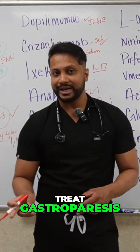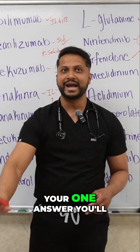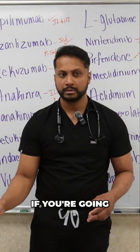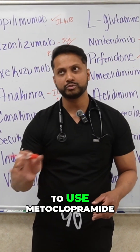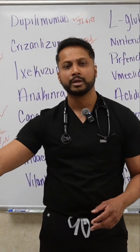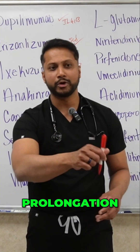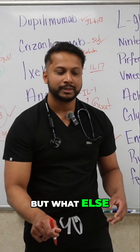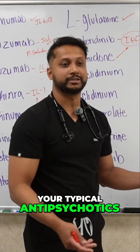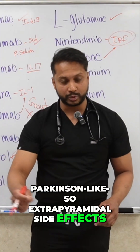Viral infections can actually cause gastroparesis. So you can have gastroparesis from multiple causes. How do you treat gastroparesis? Most of the time, the one answer you'll always pick is metoclopramide. If you're going to use metoclopramide, what should you worry about in those patients? QT prolongation, yes — but what else? It's very similar to your typical antipsychotics, right? So, extrapyramidal side effects.